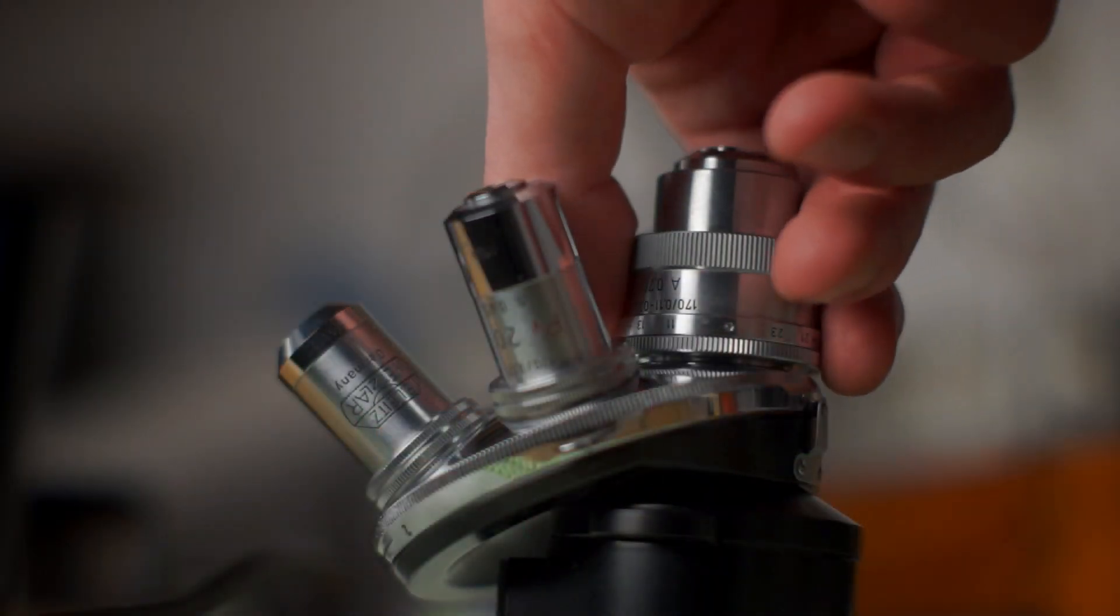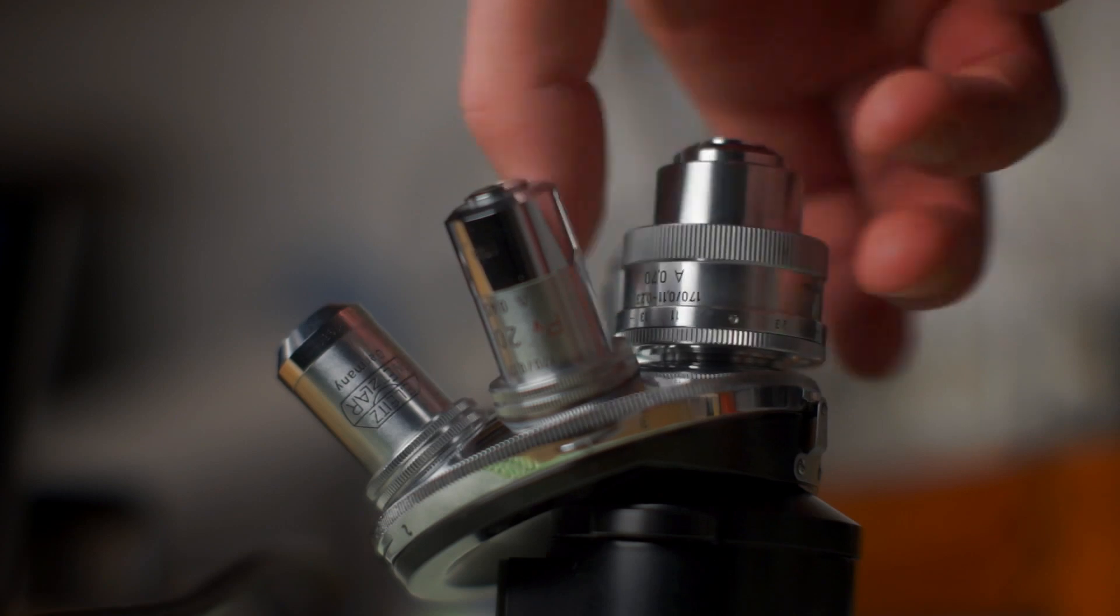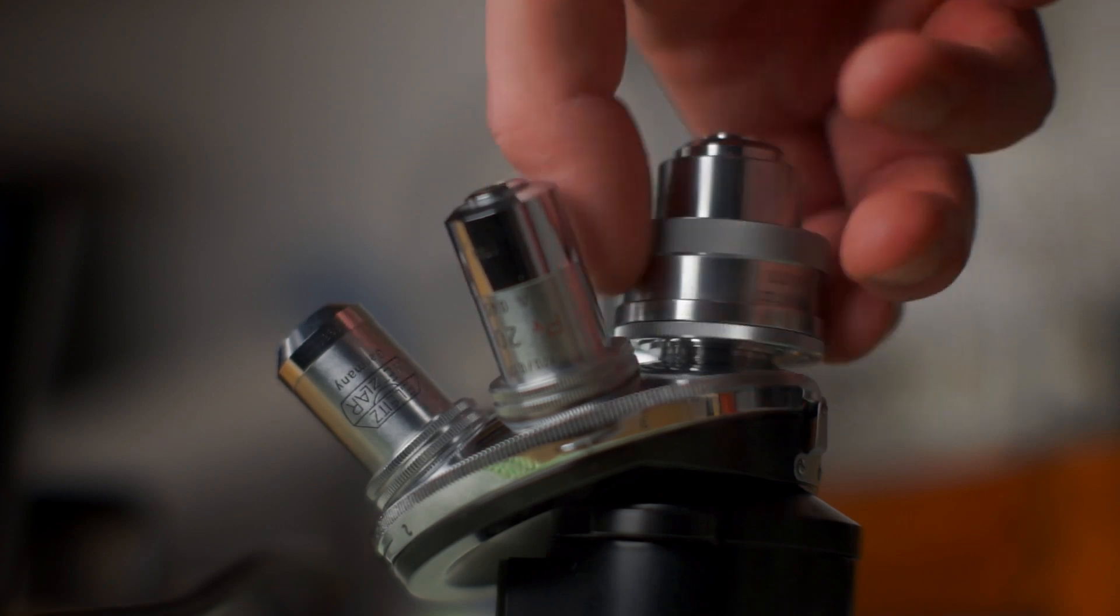After we have modified the screwdriver, it's time to remove the objectives from the revolver. The lenses were stored in objective storage cases to protect them from harm during the servicing.